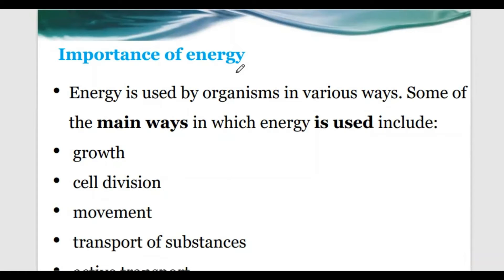What are some of the importance of this energy - why do we need energy in our bodies? Energy is needed by organisms for various ways. Number one is growth. Growth requires energy because there are so many active processes and any active process requires energy, and this energy comes from respiration. Number two is cell division - it can be either meiosis or mitosis. These divisions are active processes therefore energy is needed for those divisions to take place.